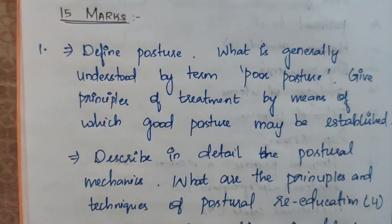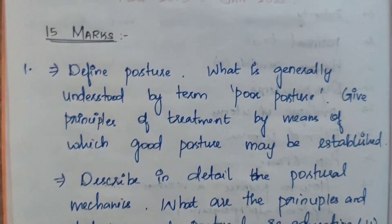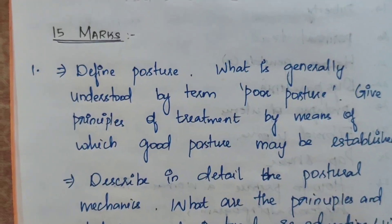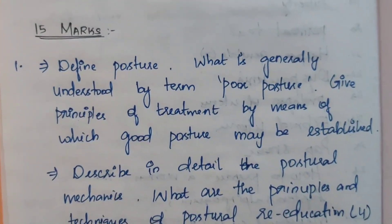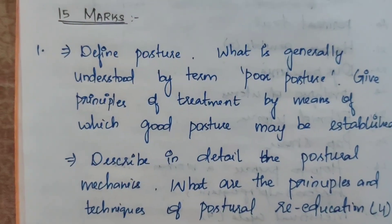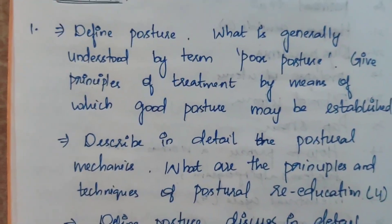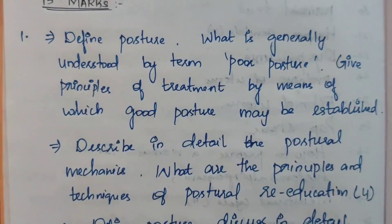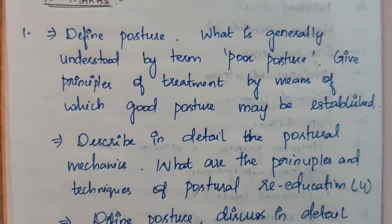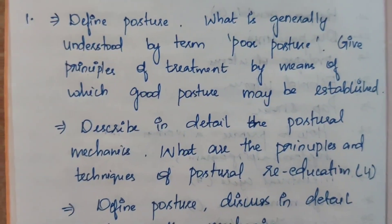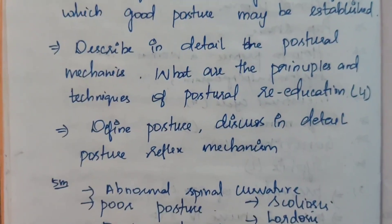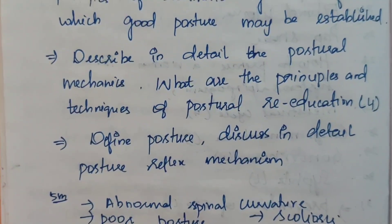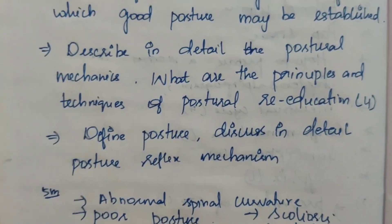The first topic is posture-related. In 15-mark questions, topics include: define posture, what is generally understood by the term 'poor posture,' give principles of treatment by which good posture may be established. Also: describe in detail the postural mechanics, and what are the principles and techniques of posture re-education — this appears as a 15-mark question 4 times.